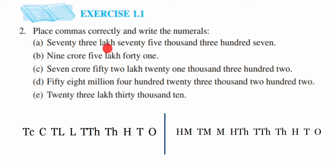The question combines both types: Indian system and International system. We have to identify which one to use. In the International system, we have millions and thousands. In the Indian system, we have lakh and crore. Using those keywords, we can identify the system. For the Indian system, we follow one set of place values, and for the International system, we follow another. I've already written both so it won't take much time.